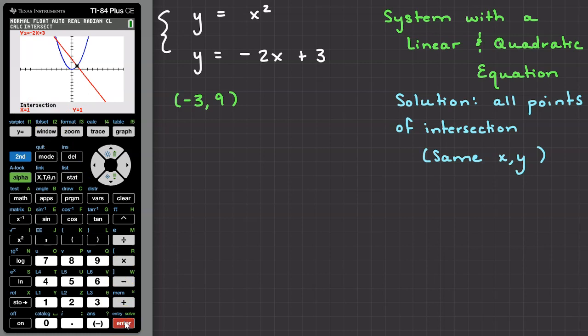The calculator will find the point of intersection exactly, which is located at x equals 1, y equals 1.